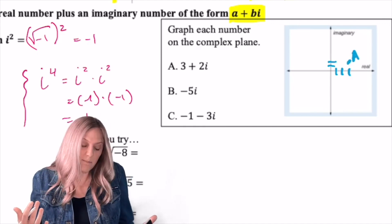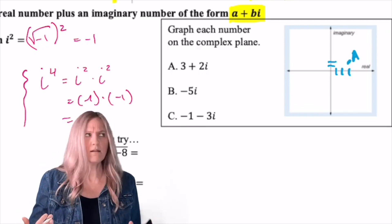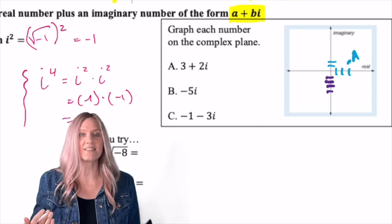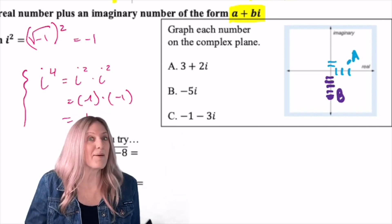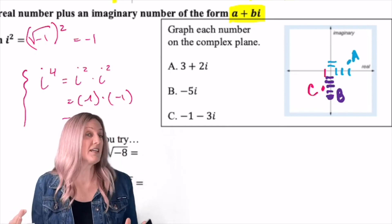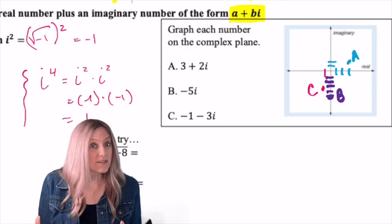What would we do for point B? Negative 5i. Imaginary. Well, it's going to be on the imaginary axis. Down five. All right, plot point C. C ends up in like my third quadrant.